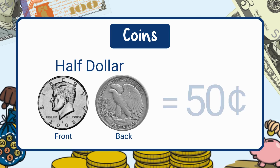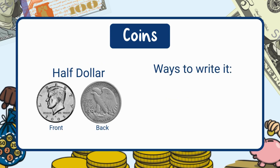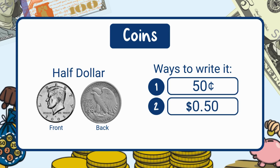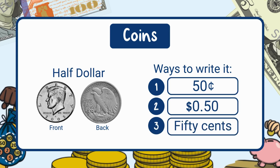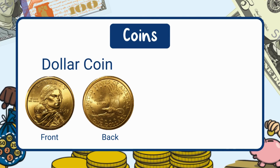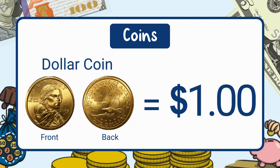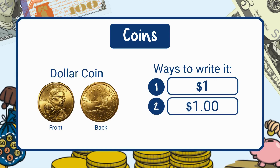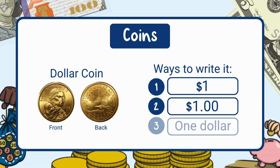This is the half dollar. It's worth 50 cents, which is half of a dollar. Ways to write it: standard form, 50 cents; decimal form, 50 cents. This is the dollar coin. It's worth one dollar, just like a paper dollar. Ways to write it: standard form, one dollar; decimal form, one dollar; written form, one dollar.